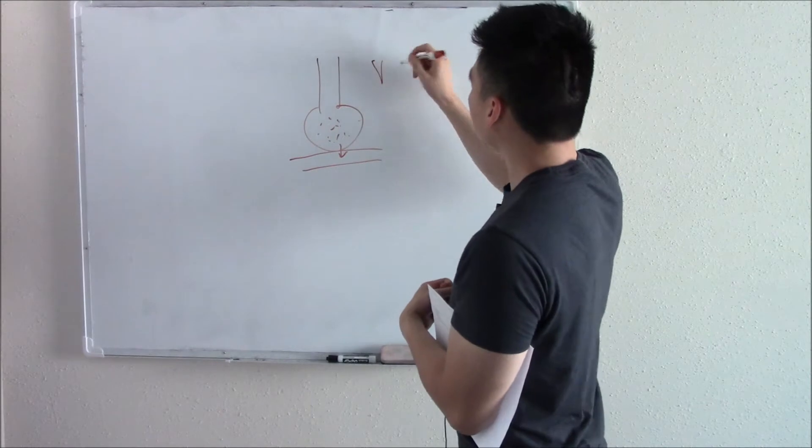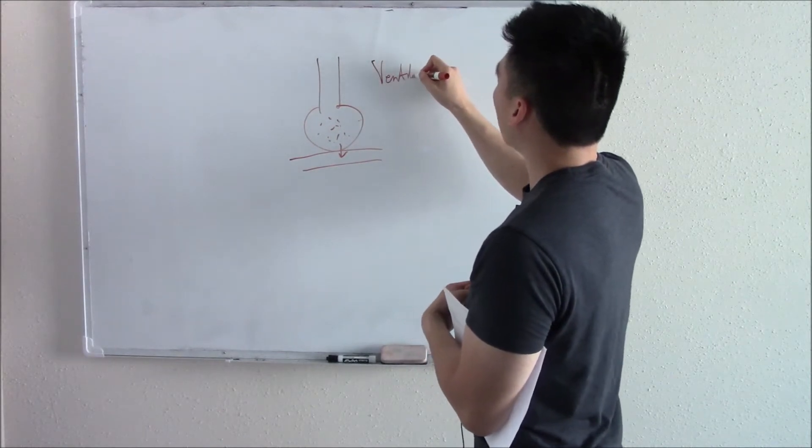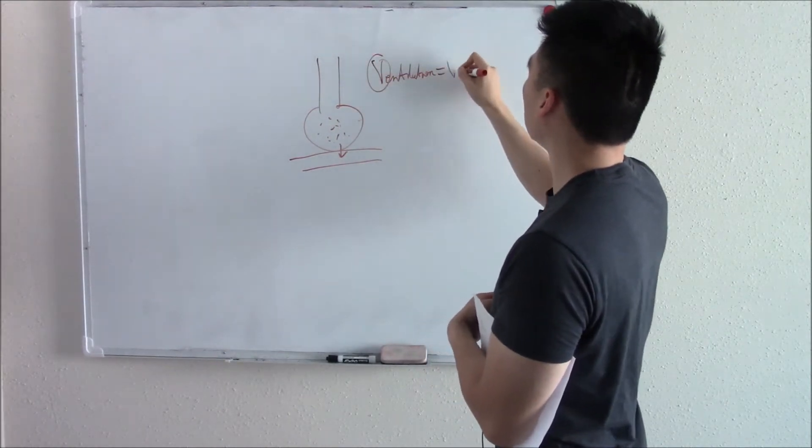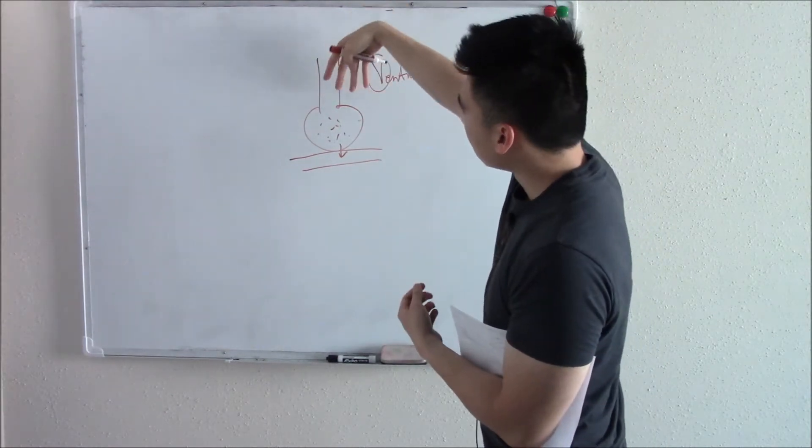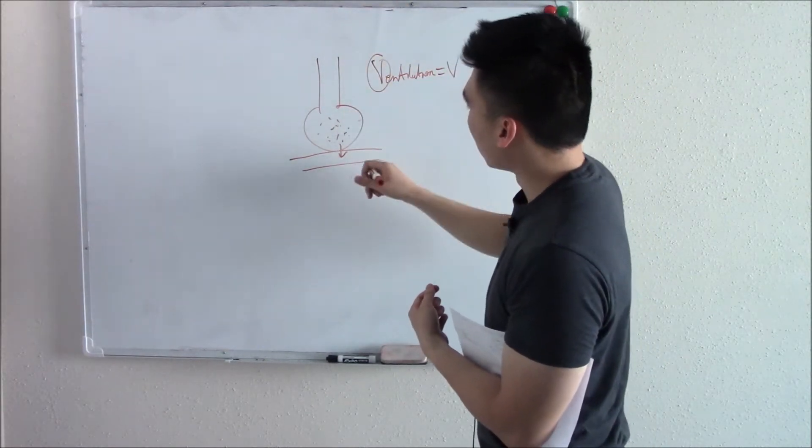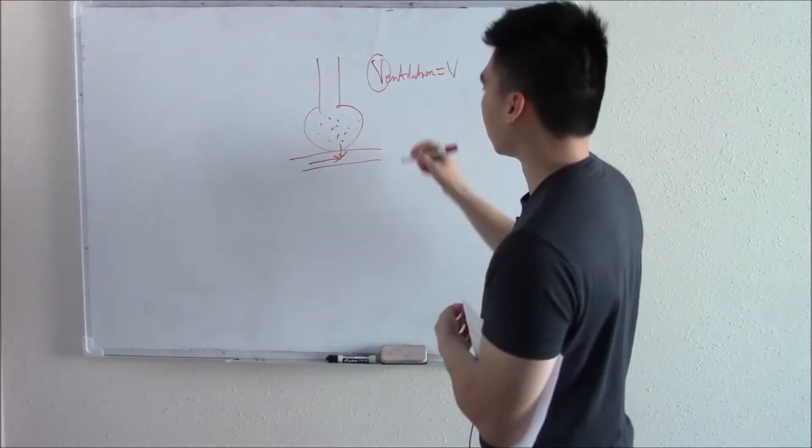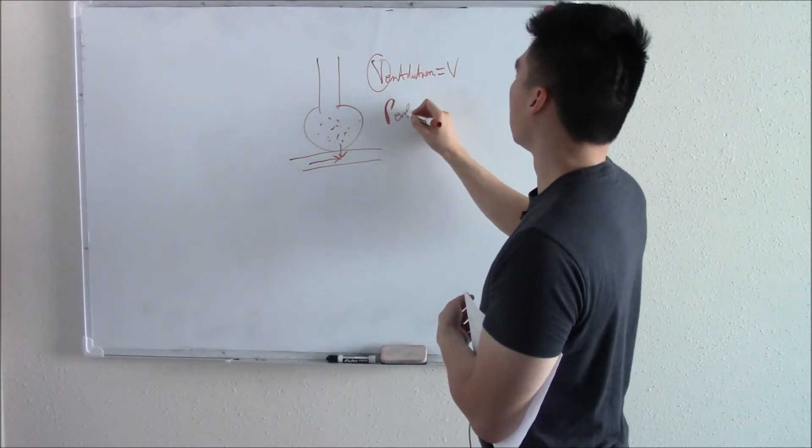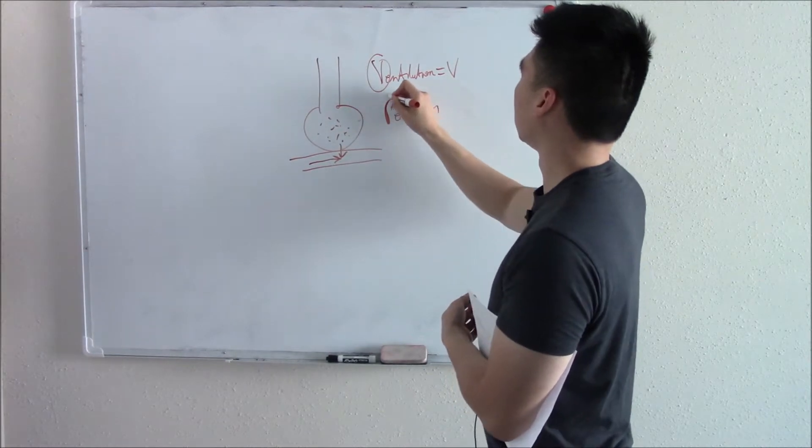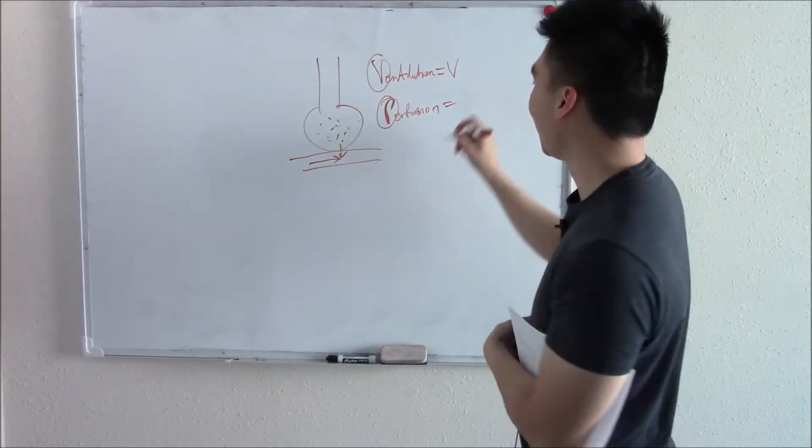We take a deep breath in. We call it ventilation. We can denote ventilation with V. We take a deep breath of oxygen, that's called ventilation, and then some will go into our blood. Our blood will pick it up. There's perfusion. And we can denote that with, you guessed it, you're wrong, Q.